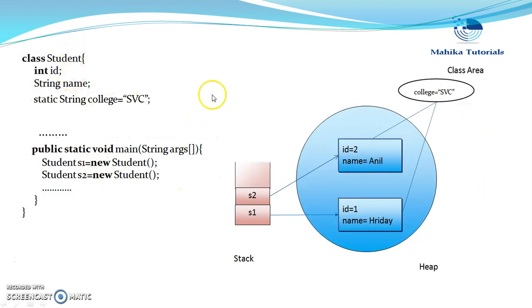Now this is how memory allocation takes place for local, static, and instance variables. We say that instance variables go to heap and local variables go to stack, and the static variables are stored in class area.